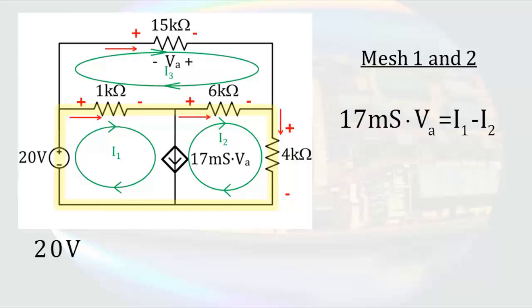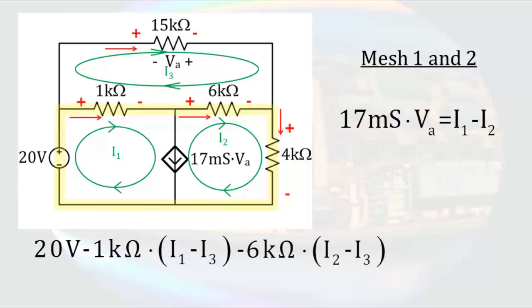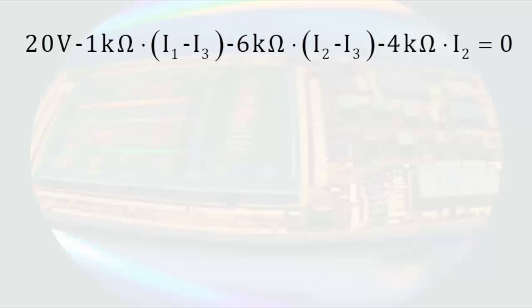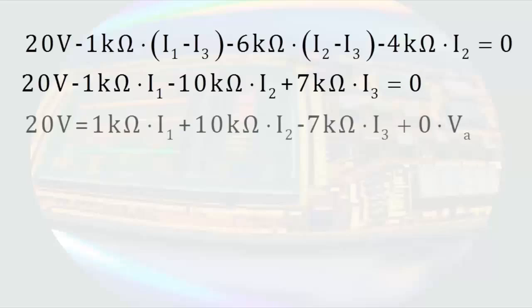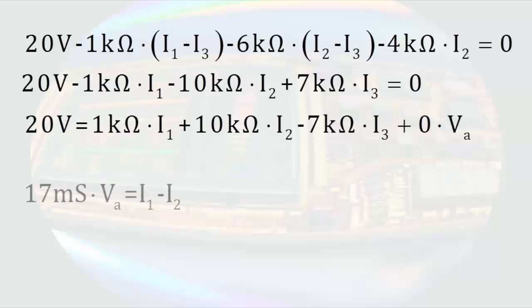Beginning in the lower left-hand corner and going around the supermesh clockwise, I have an increase of 20 volts. The 1kΩ resistor gives a voltage drop of 1kΩ times I1 minus I3. Next, there is a voltage drop across the 6kΩ resistor of 6kΩ times I2 minus I3. Last, we have the voltage drop across the 4kΩ resistor, which is 4kΩ times I2. Taking these two equations and setting them up for a matrix, we gather terms and add a coefficient for every variable.